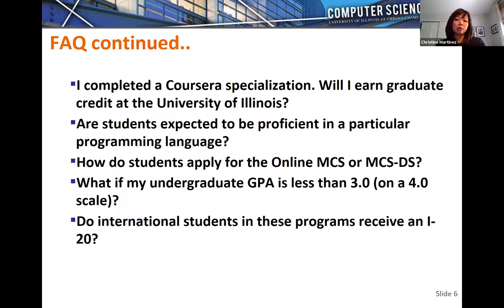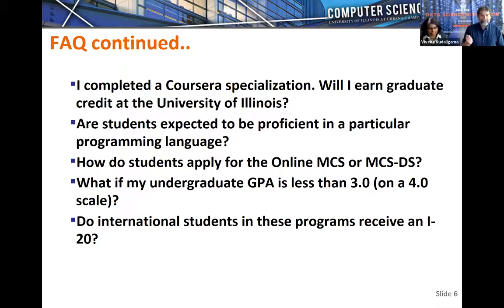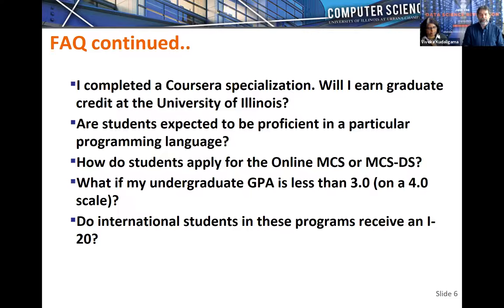Are students expected to be proficient in a particular programming language? We expect proficiency in English. For programming languages, most students know Python, and we have material available in Python and R. It really helps to be proficient in one production language — either C++ or Java. If you don't have experience with C++ or Java, we recommend you pick up one of those two languages.